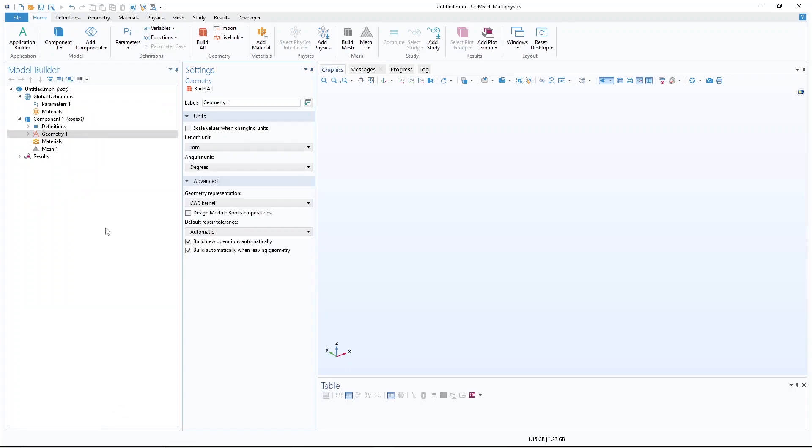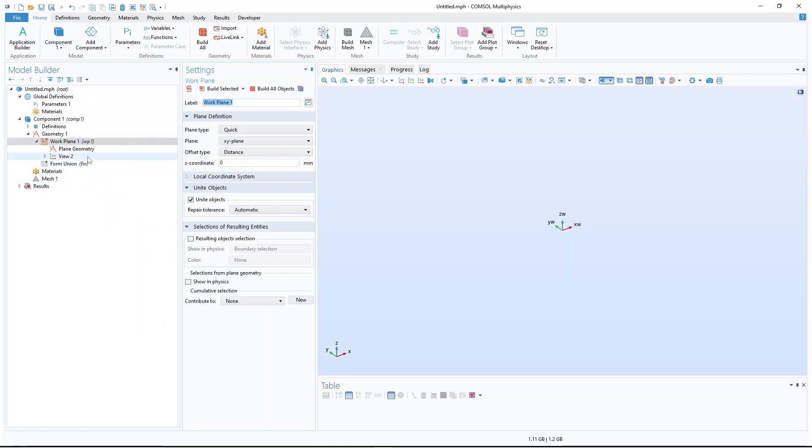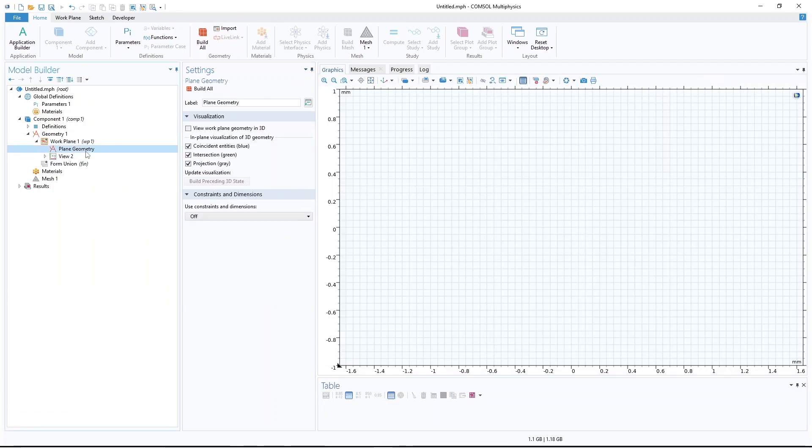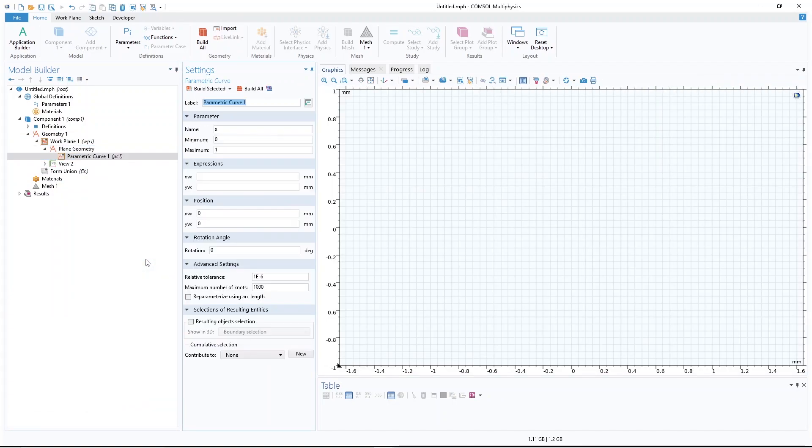Dimension, let us use millimeter. So in the geometry, right click, create a work plane. And plane geometry, right click, select the parametric curve.